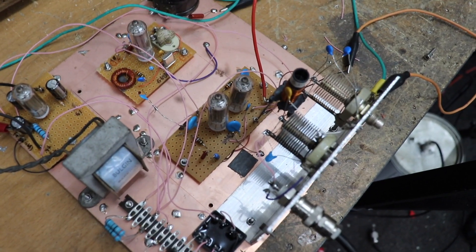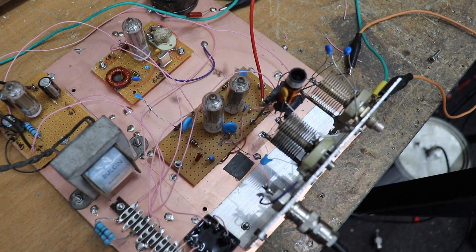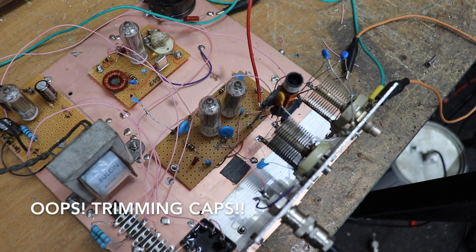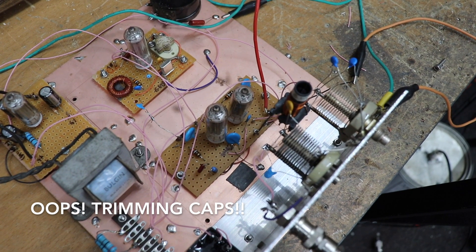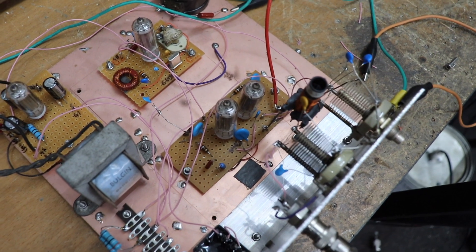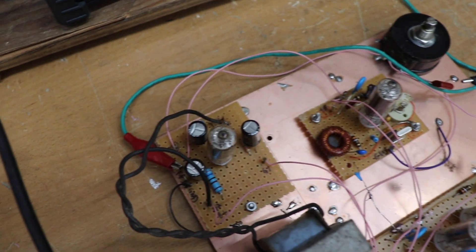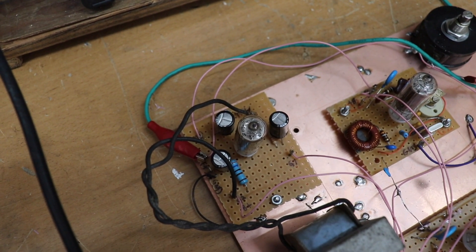As you can see there I've got a couple of little Jackson trimming type pots which are preset for the PI network on the output. And as mentioned that's crystal oscillator. And this valve at the back is our modulator.